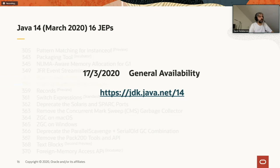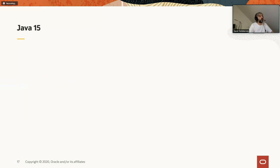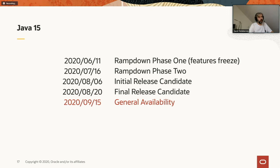Java 14 was released in March 2020 and everything is open source. At jdk.java.net/14 you can access the OpenJDK builds and all the technical content for that release. Java 15 will be released in September 2020. We know the schedule: Ramp Phase 1 — the feature freeze — is about one month away, on June 11th. Based on information available in the OpenJDK project today, we can already discuss what's planned for 15, keeping in mind that things can still change at the last minute.